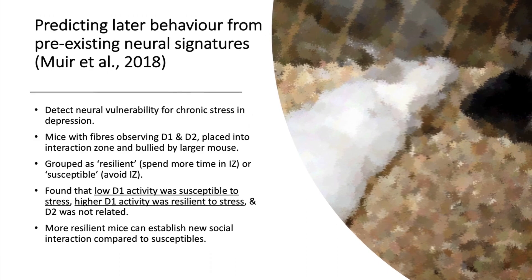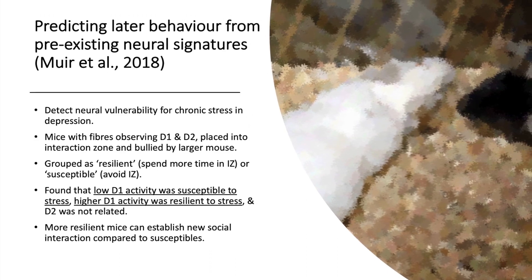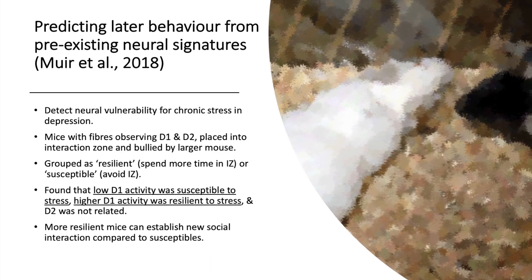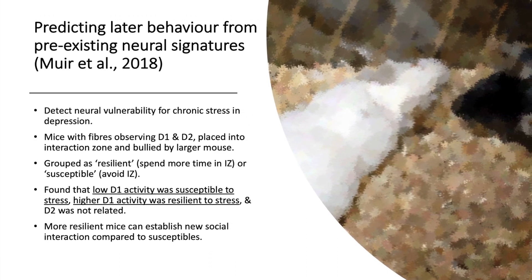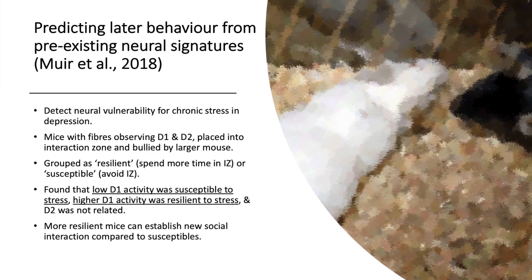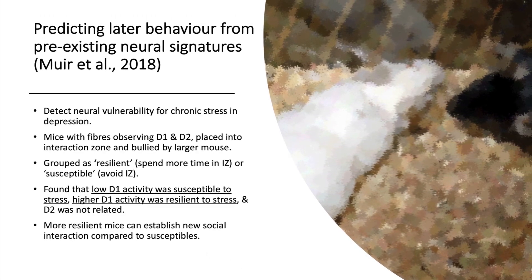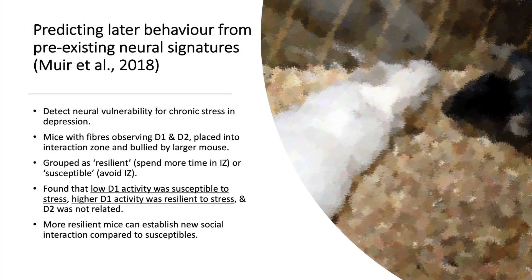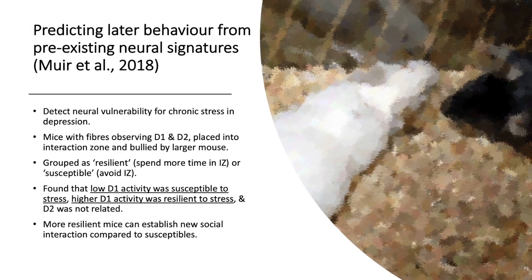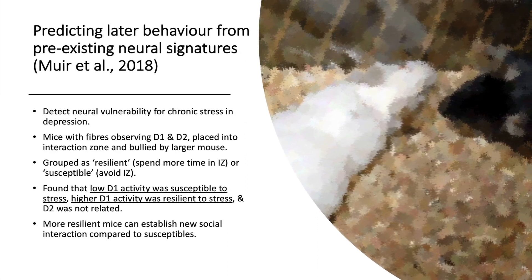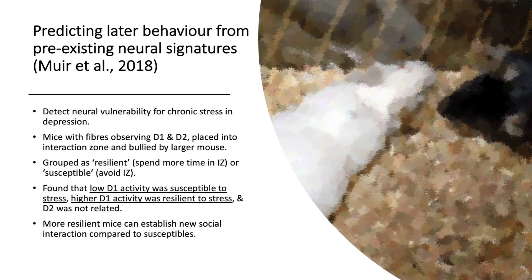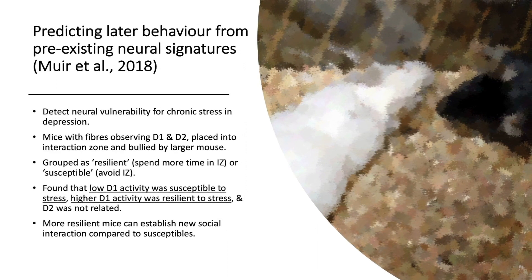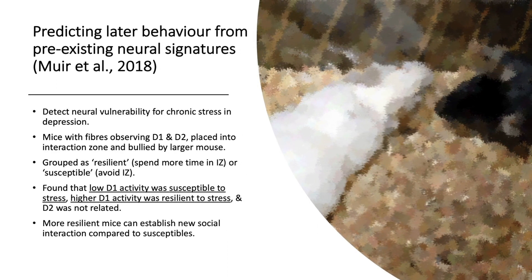More resilient mice can establish new social interactions compared to those who were susceptible. It is interesting that this influences most of the research covered — from Gunaydin, Calipari, and Murr et al. Activity in the D1 is important in interacting in new contexts and interacting with new organisms of the same species, but all of these affect the D2 area less so.